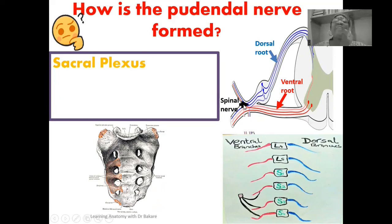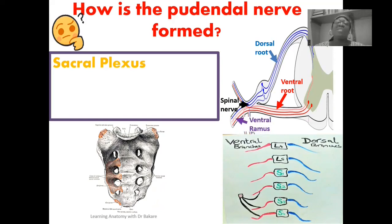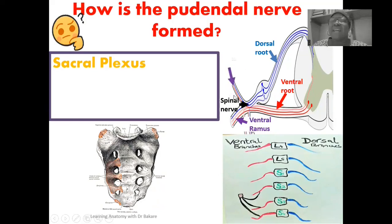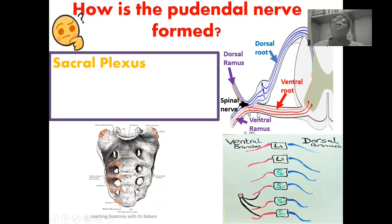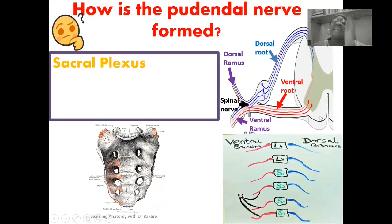The spinal nerve will then further subdivide into two sub-regions. We have the ventral ramus, highlighted here in purple, which is ventral because it is in the anterior part. Behind, we also have the dorsal ramus, also highlighted in purple. This configuration is seen on both sides of the spinal cord; this is just a one-sided presentation.